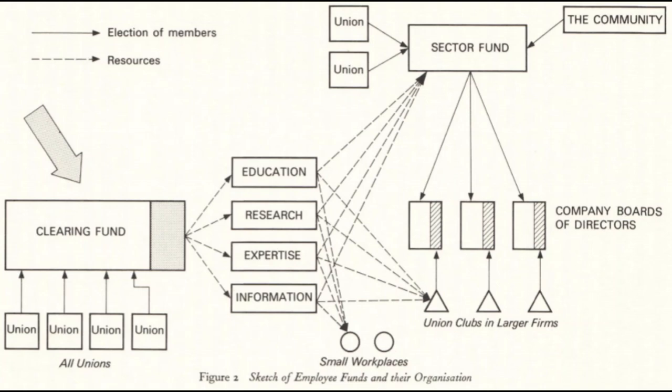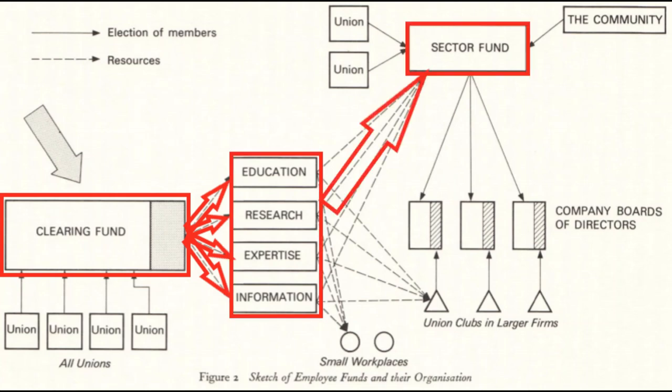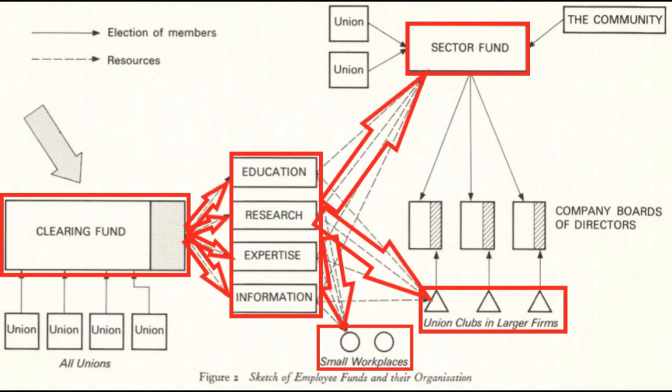To start explaining what these funds were to be used for, we can return to the diagram that outlined the structure of the wage earner fund system. On the left side of the diagram, we see resources leave from the clearing fund and go towards four boxes representing education, research, expertise, and information that are further relayed towards the sector funds, unions, and small workplaces. You'll notice again, to emphasize this, that among those options, none is a direct transfer of cash to workers.